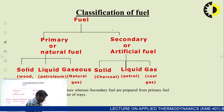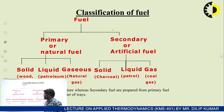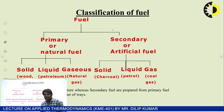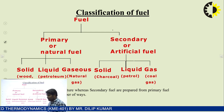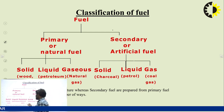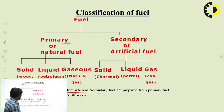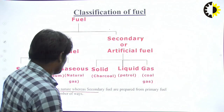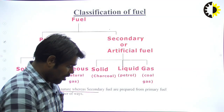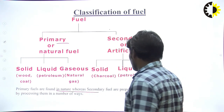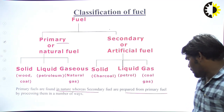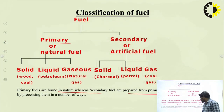Classification of fuel: there are two parts — one is primary fuel and the other is secondary fuel. Primary fuel is basically related to natural sources, found in nature. Secondary fuel, or artificial fuel, is formed from primary fuel or prepared from primary fuel by processing in a number of ways.